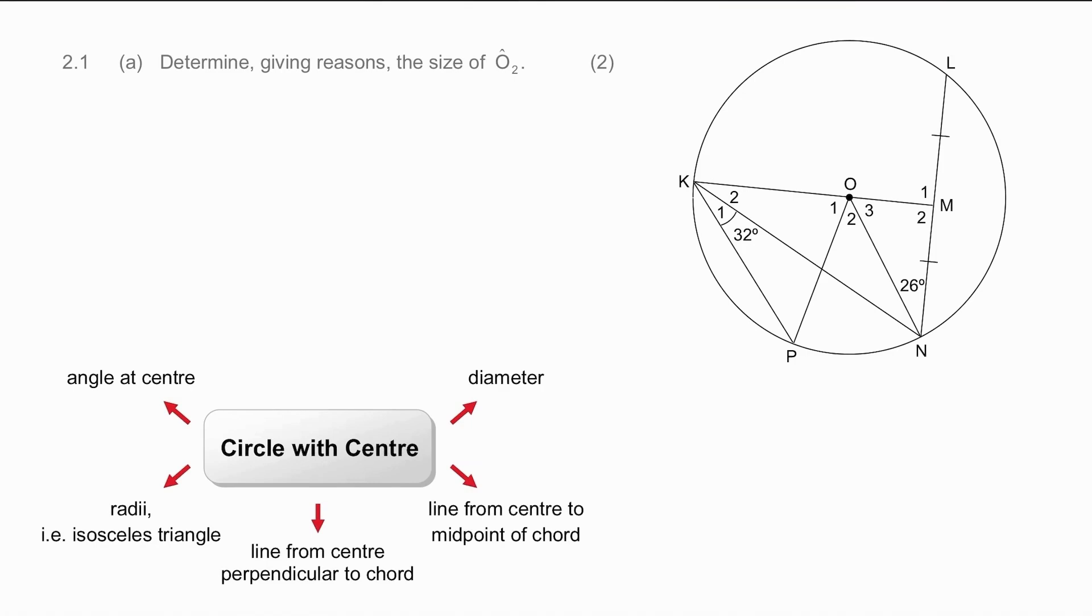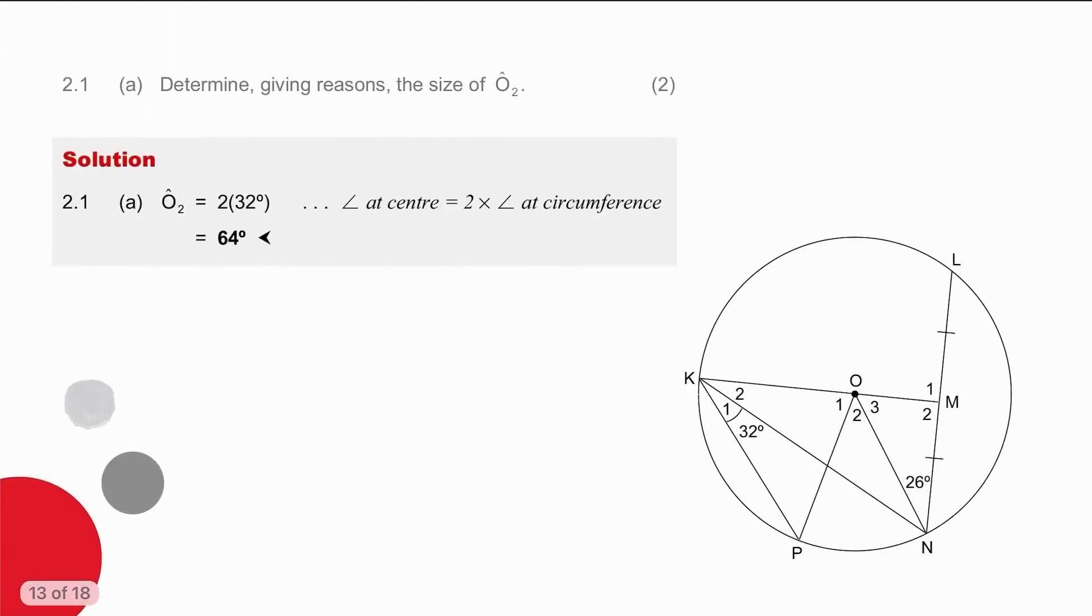In question 2.1, we are asked to determine with reasons the size of angle O2. We're going to start by locating that on the sketch. Angle O2 is an angle at the center. If we trace the sides that form the angle, it does help us to engage properly with the question. They are coming off an invisible chord, PN. PN subtends an angle which we can see at K. So there's a relationship between those two angles. And all we have to do is recognize that the angle at the center is twice the size of the angle on the circumference. So angle O2 will be 64 degrees. To write that up, we simply claim that angle O2 is 64 degrees, and our reason to justify what we said, angle at center equals twice angle at circumference.